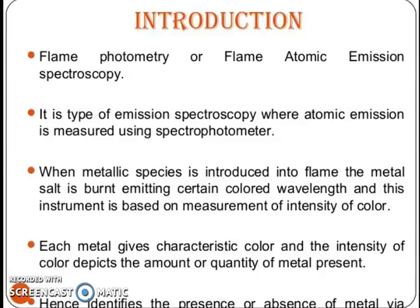Flame photometer, or flame atomic emission spectroscopy, is a type of emission spectroscopy where atomic emission is measured using a spectrophotometer. When a metallic species is introduced into a flame, the metal salt is burned emitting certain colored vapor. This instrument is based on the measurement of the intensity of color — each metal gives a characteristic color, and the intensity of that color depicts the amount or quantity of metal present, hence identifying the presence or absence of the metal.